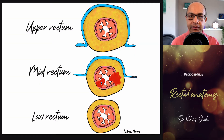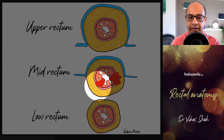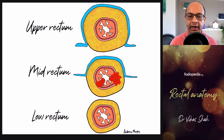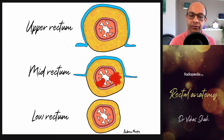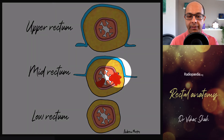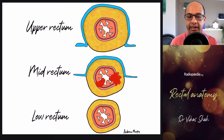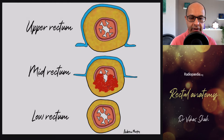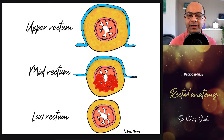If a tumor is confined to the mucosa it's T1; if it extends to the muscularis propria it's T2 — though on MRI we can't readily differentiate between T1 and T2 with current resolution. That last tumor did not go through the muscularis propria, so it would be T2 at worst. When a tumor penetrates the muscularis propria it's a T3 tumor, and usually has a nodular, lumpy-bumpy configuration to the pushing margin. Another important consideration is the invasive margin of the tumor.